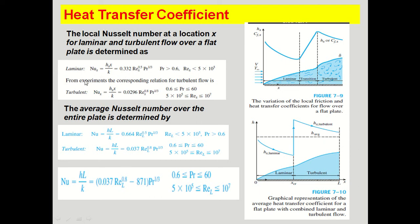For turbulent flow, the local Nusselt number is: Nu_x = h(x)·x/k = 0.0296 · Re_x^0.8 · Pr^(1/3), valid when Pr is between 0.6 and 16 and the Reynolds number is between 5 × 10⁵ and 10⁷.